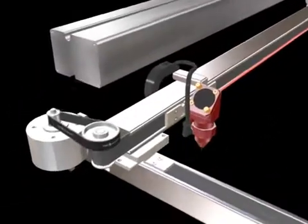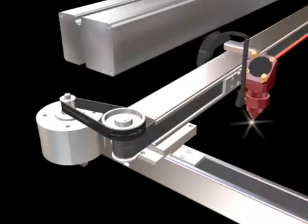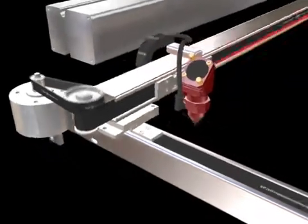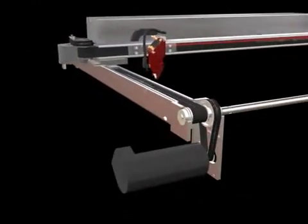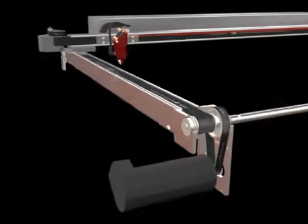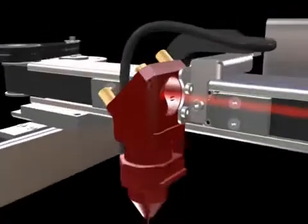Trotec lasers are the fastest and most productive flatbed systems available. We use only the highest quality components from leading international manufacturers. Brushless DC servo motors and drive belts with embedded steel cords ensure quality and precision even at the maximum speed of 3.5 meters or 140 inches per second.